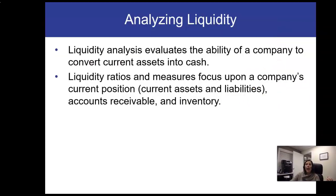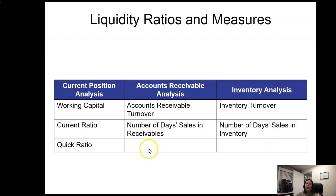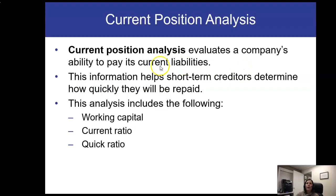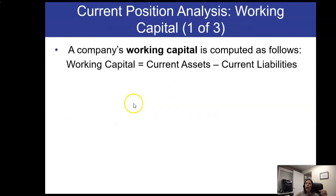We're going to move on to looking at liquidity. As mentioned earlier, there are specific ratios designed to measure liquidity. There are seven ratios and measures that can be used to assess a company's liquidity: those that look at the current position, those that look at accounts receivable, and those that look at inventory. The current position analysis includes the working capital, the current ratio, and the quick ratio. Working capital is the easiest — current assets minus current liabilities.